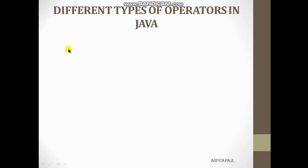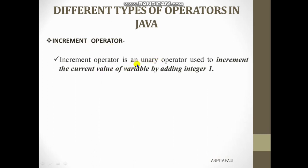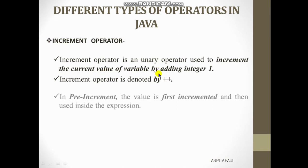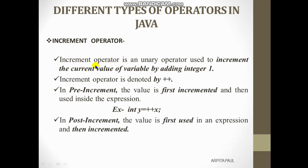The next operator is the increment operator. It is an unary operator used to increment the current value of a variable by adding integer 1. It works on only one operand, which is why it is called an unary operator. It is denoted by the plus-plus (++) sign.